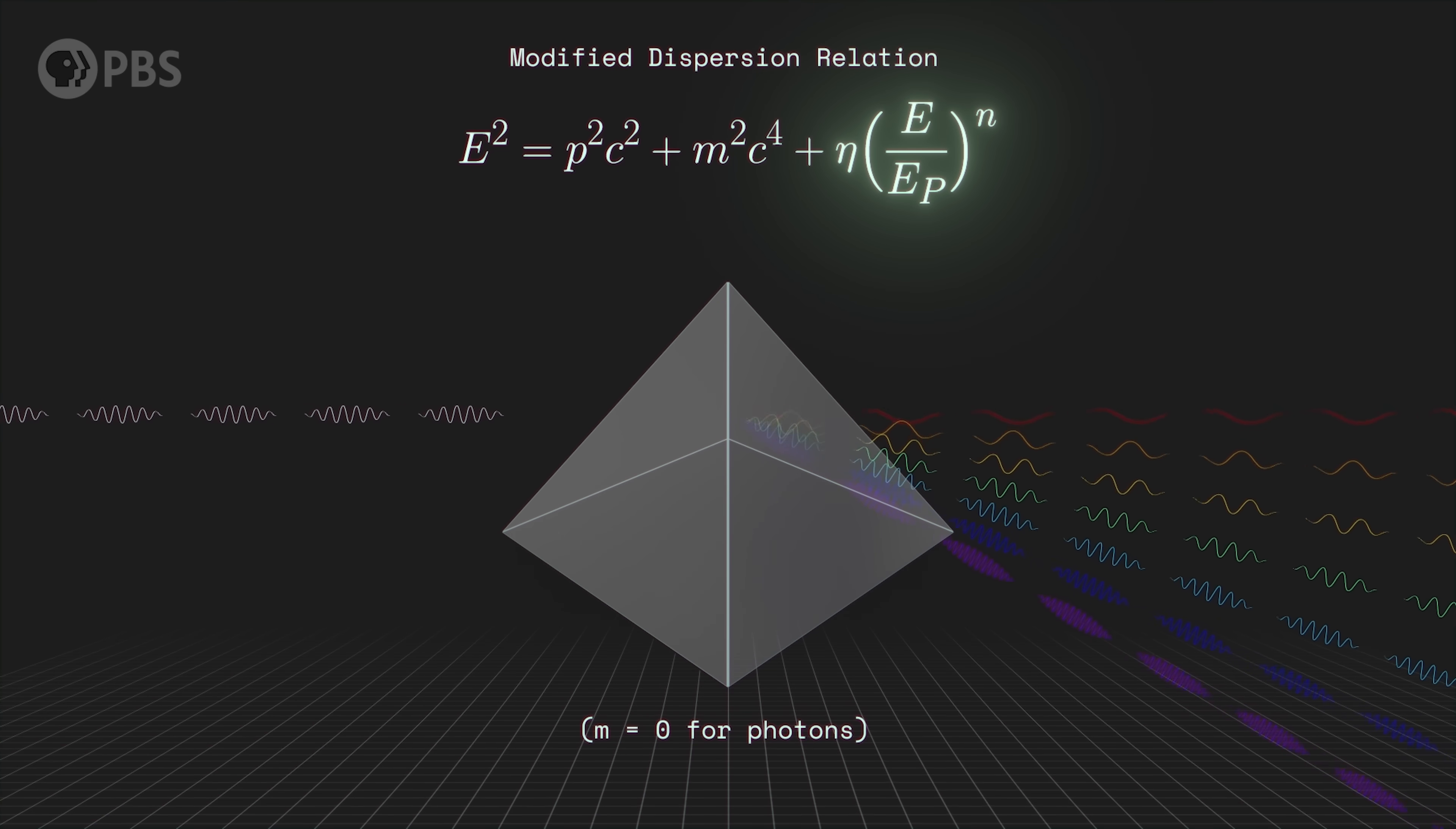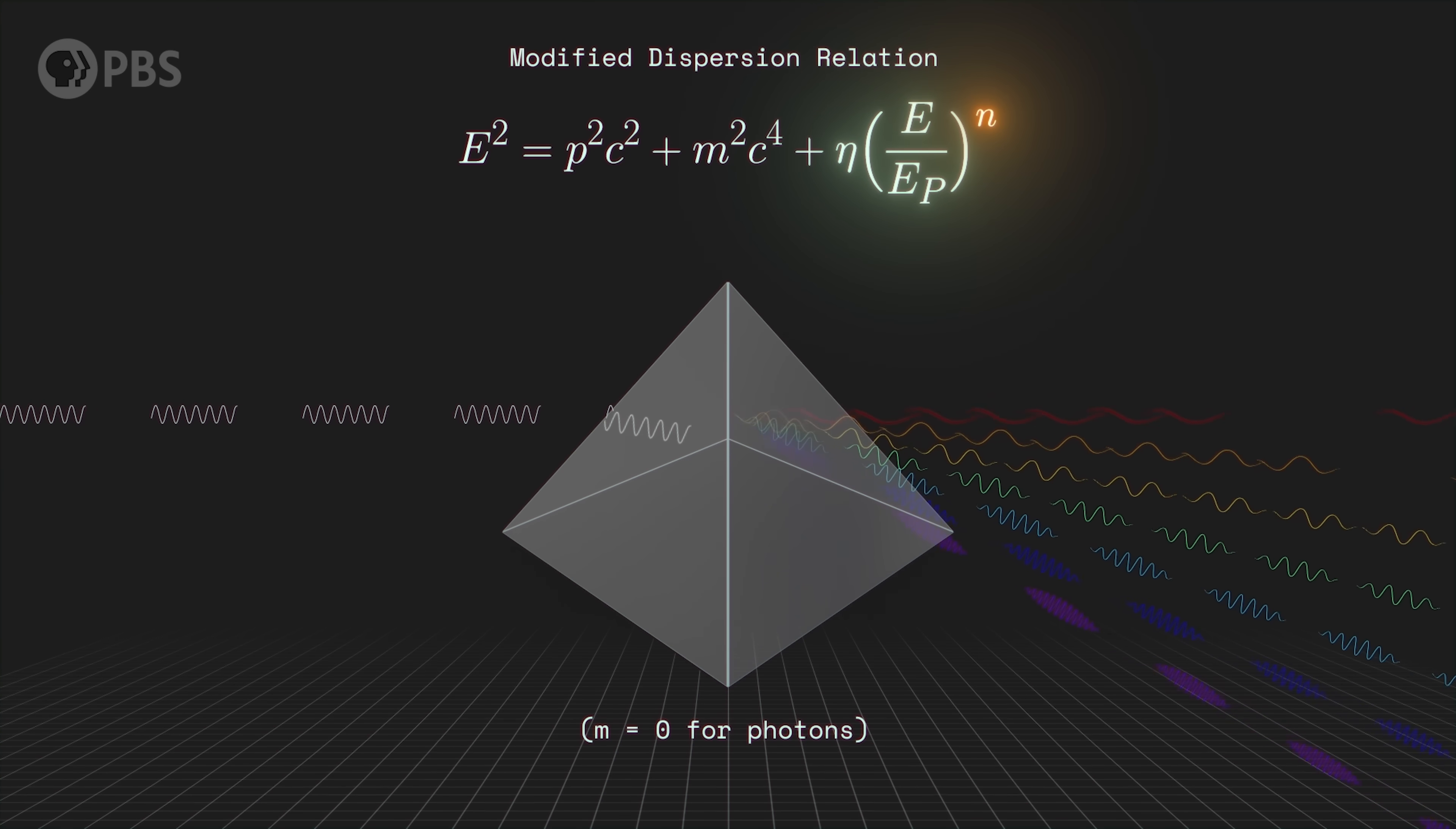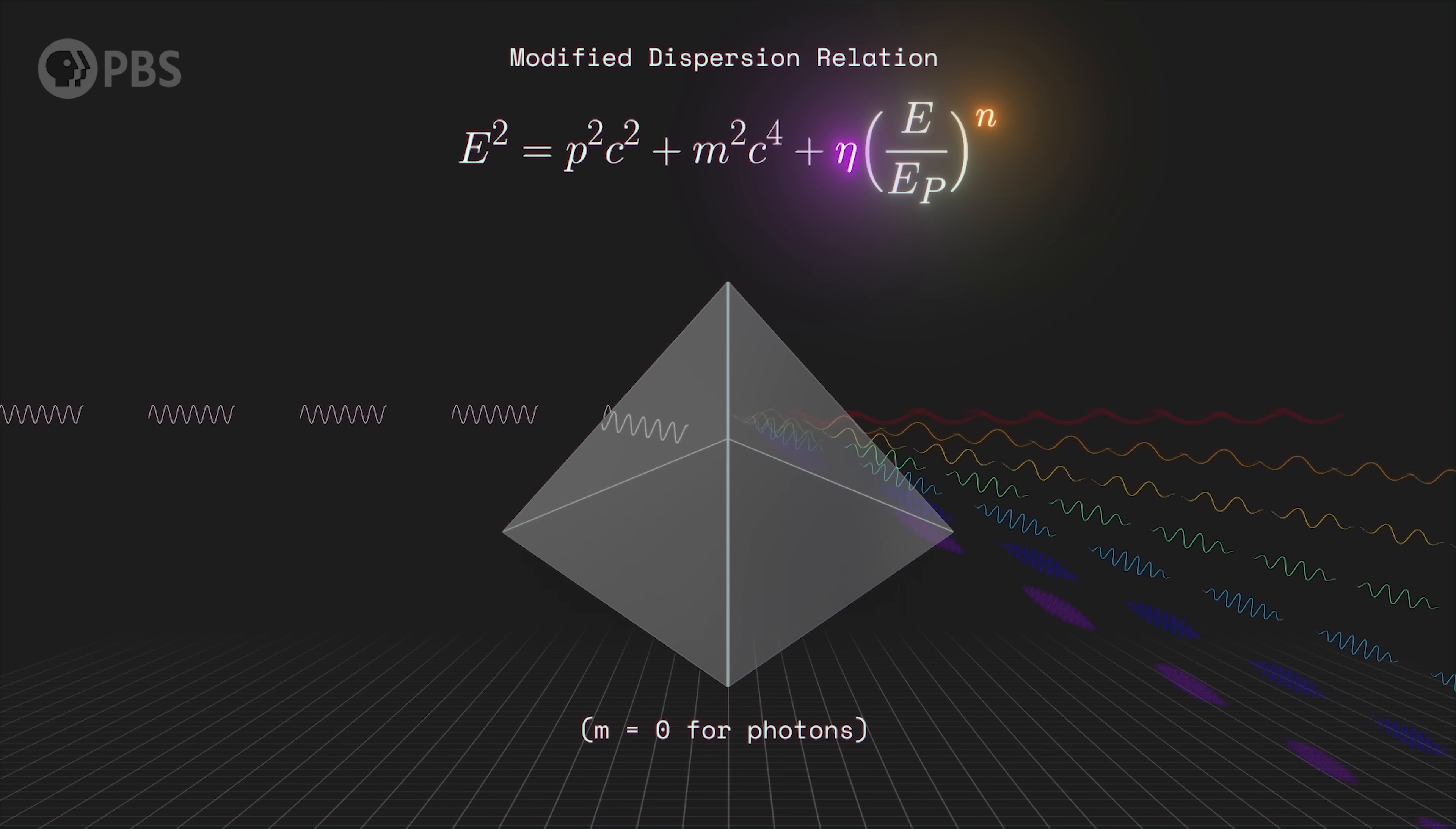You've seen the E equals mc squared part of it, it's probably the most famous equation in the world, but the full version is this. It says that a particle's energy is equal to the energy bound up in its mass plus the energy of its motion, expressed here in terms of the particle's momentum. It's also called the relativistic dispersion relation, which I'm telling you now because I have to keep calling it the dispersion relation for the next bit. Remember that the Lorentz factor was added to the Galilean transformation in a way that makes it significant only at velocities close to the speed of light. We can also add this factor to the dispersion relation that only becomes relevant at energies close to the Planck energy. This is the modified dispersion relation, the MDR. That extra bit stands for one or more terms that include the ratio of the particle energy to the Planck energy.